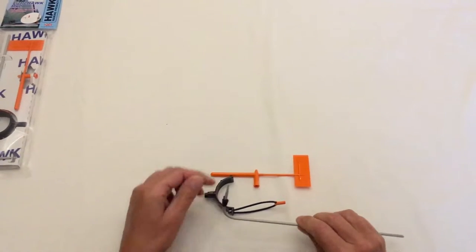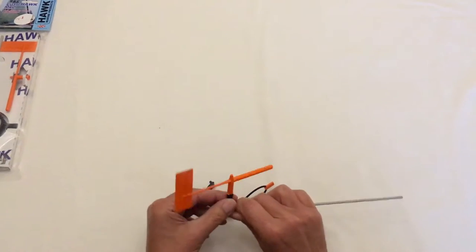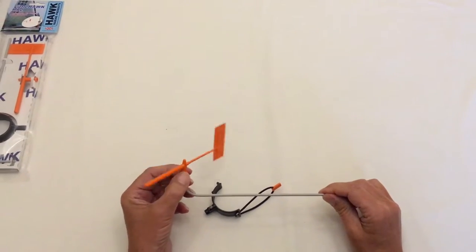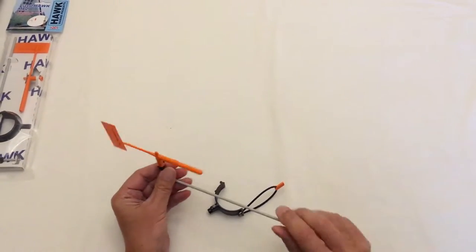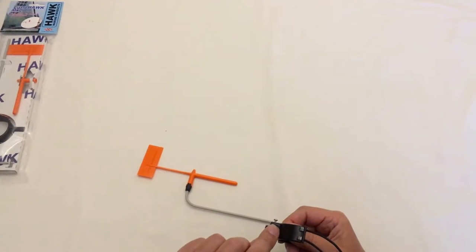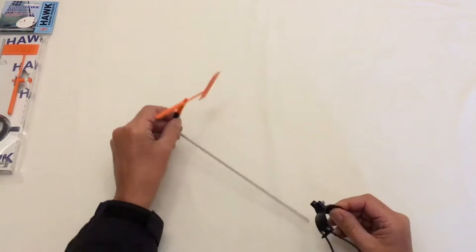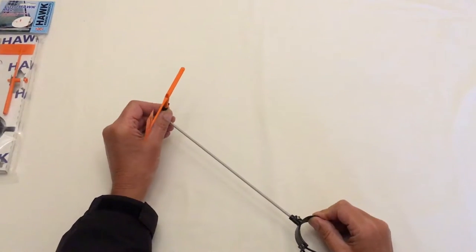So the first job is to just click into position the vein arm and the support rod. There we go. And then we assemble that to the mast clamp. Now the mast clamp has a screw in it which you want to make sure is wound all the way out. Push the two together.